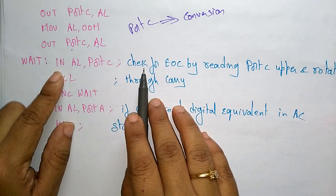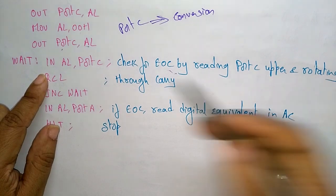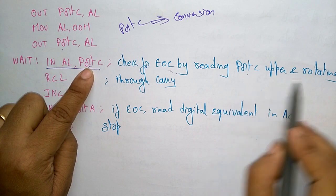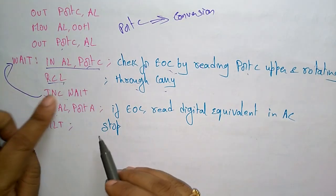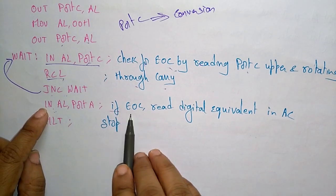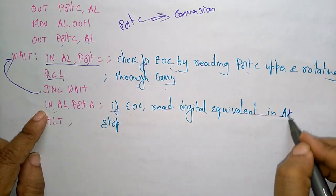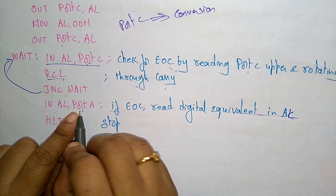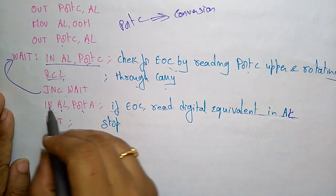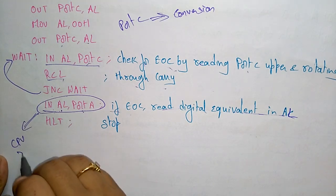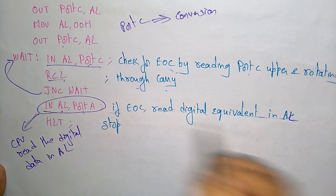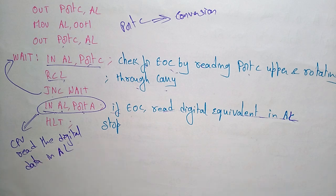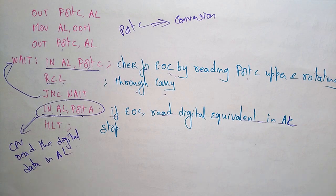After that, we read port C to check for end of conversion. We check whether end of conversion is reached by reading port C upper and rotating through carry. If end of conversion is not reached, we jump back using a no-carry jump. Once end of conversion is reached, we read the digital equivalent into AL from port A. The CPU then reads the digital data in the AL register, and the program ends.